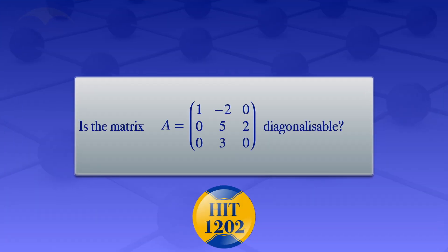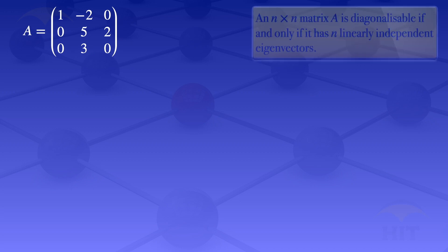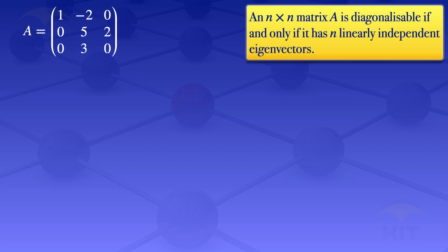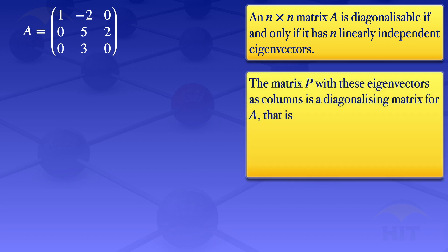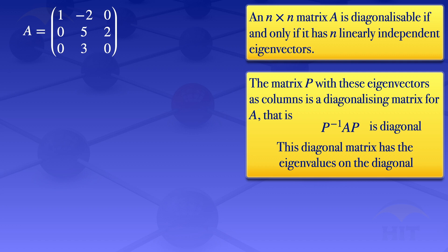In this tutorial I'm going to check if the matrix A, which has elements 1, -2, 0, 0, 5, 2, 0, 3, 0, is diagonalizable. An n by n matrix A is said to be diagonalizable if and only if it has n linearly independent eigenvectors. The matrix P, which has these eigenvectors as columns, is a diagonalizing matrix for A — that is, P inverse A P is diagonal.